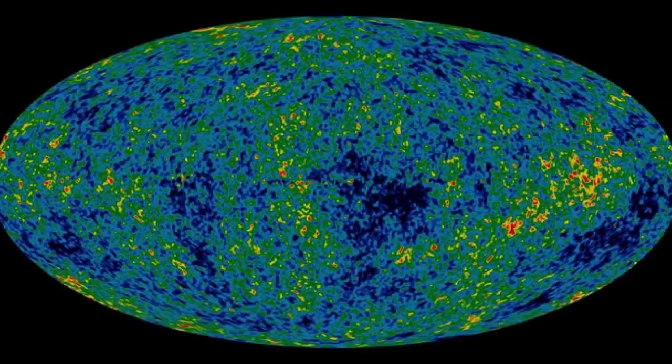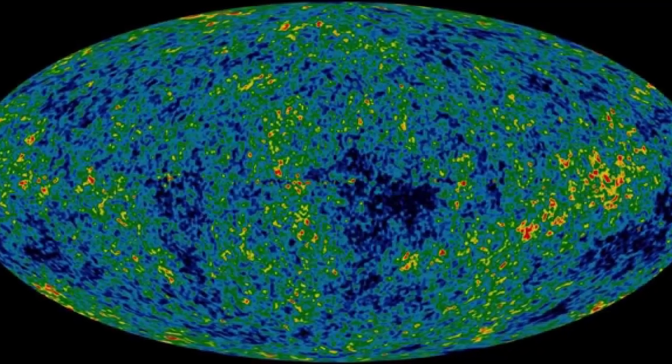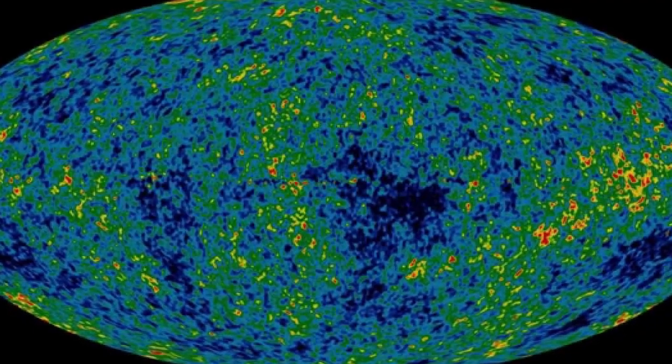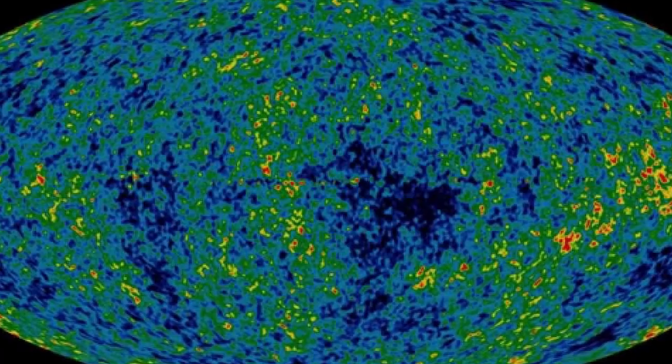Another argument Humphrey supporters state is that the universal background radiation is the same no matter what direction we look in the universe. While it certainly does persist in every direction, maps of this radiation demonstrate conclusively that it is anything but uniform in intensity.